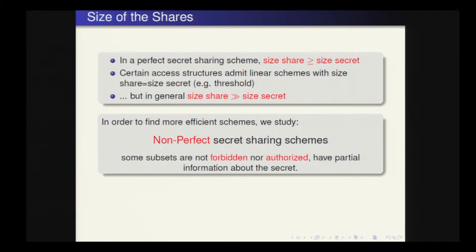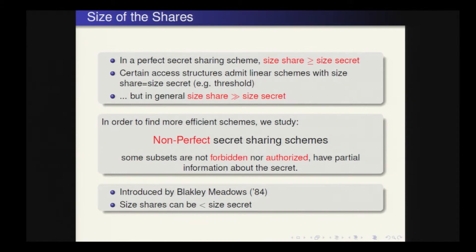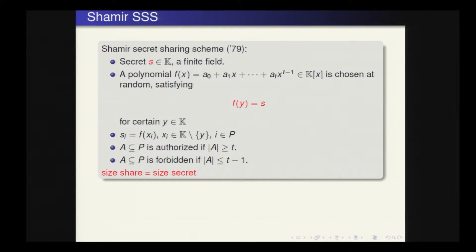In order to find more efficient schemes, we study non-perfect schemes. In these schemes, some subsets are neither forbidden nor authorized, and may have partial information about the secret. These schemes were introduced by Blakley and Meadows, who showed that the size of the shares can be smaller than the size of the secret in certain situations. I will now present the scheme by Blakley and Meadows, which was based on Shamir's scheme.